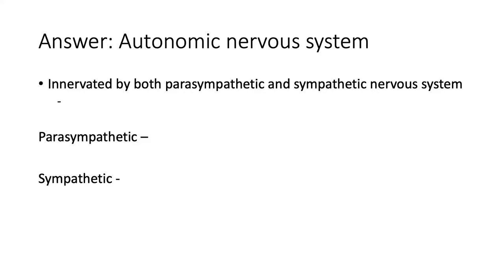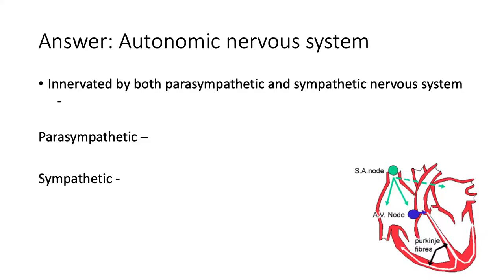The autonomic nervous system works most effectively by working on the SA node — the sinoatrial area of the heart — which is the pacemaker of the heart with those auto-rhythmic cells. The autonomic nervous system works primarily on that SA node.